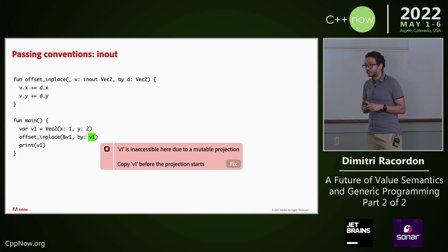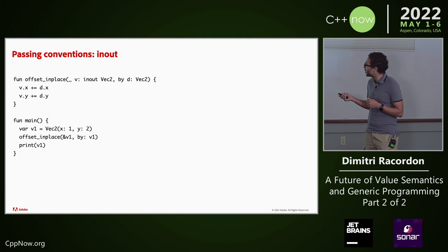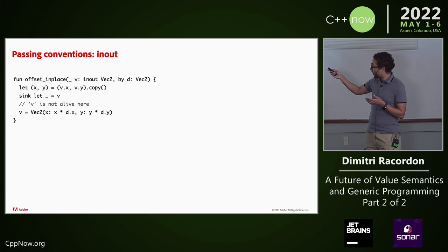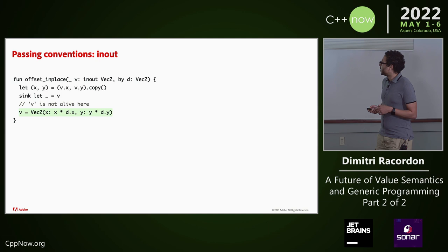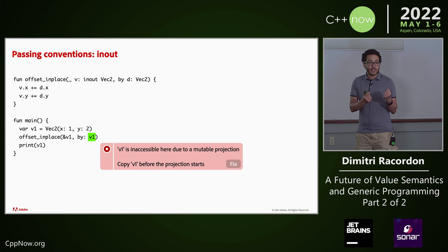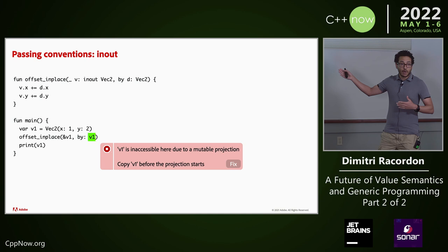The compiler knows it's not alive, and you can't use it until you reassign it. In the previous example, trying to read v between the sink-let and the reassignment would be a type error. Let's call that function. Because sink parameters are related to escaping, they are moving the arguments in. That means I cannot pass v1 both as the first and second arguments.